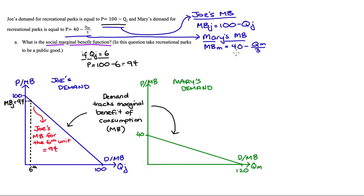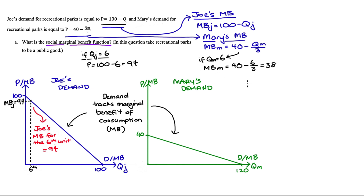So we've managed to get our marginal benefit functions for our individuals from their demand curves. Let's check that sixth unit for Mary — it will be useful later. Mary's marginal benefit of consumption for the sixth recreational park is equal to 40 - 6/3 = 38. I can put that on her diagram.